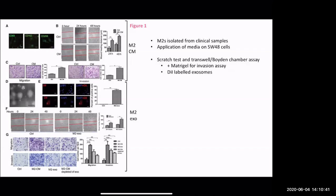They did transwell migration and invasion assays. Cells are seeded on top of an insert and migrate downwards into a matrix over time. For the invasion assay, they added an extra layer of Matrigel so cells can really invade into it, then fixed and stained to count migrating cells. They've quantified this and shown that cells treated with media from M2 macrophages have more cells migrating and invading.